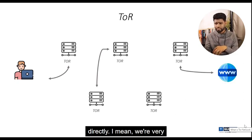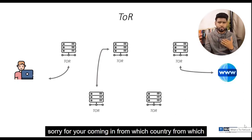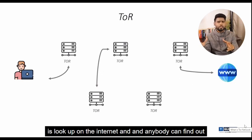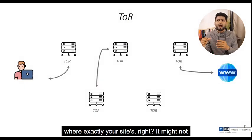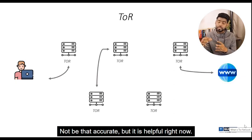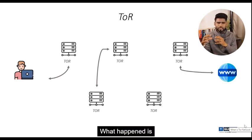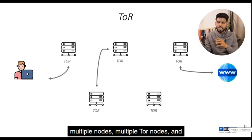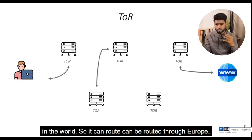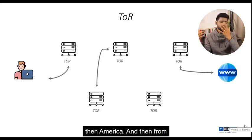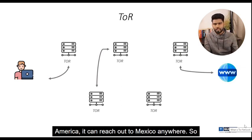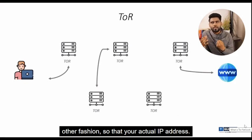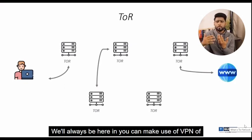Your actual public IP address can be used to locate you directly — which country, which city you are coming from. Anyone can do a WHOIS lookup on the internet and find out where you are. With Tor, your traffic goes through multiple Tor nodes that can be anywhere in the world. The route can go through Europe, then America, then Mexico — so your actual IP address is always hidden.